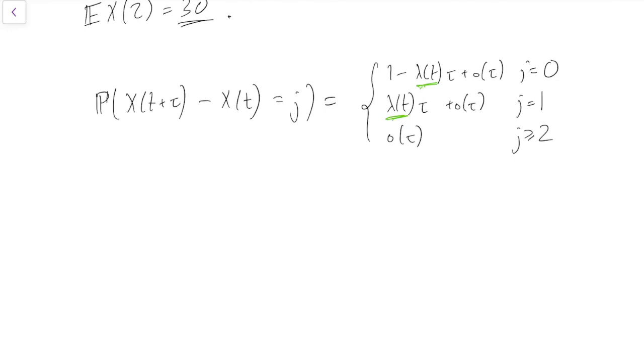So in the counting process, lambda could depend on n, the current number of people there are, number of individuals or number of arrivals there are, whereas in a time inhomogeneous Poisson process it can't depend on n, but it can depend on t. So those are the differences. In the time inhomogeneous Poisson process the rate changes over time, with the counting process the rate changes depending on how many arrivals you've had.